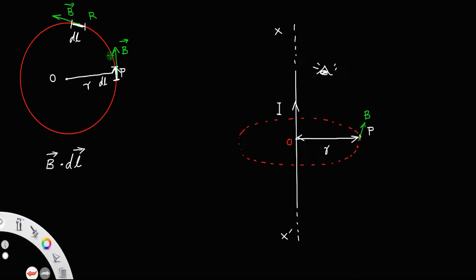So, I want to take the dot product of B dot DL along the whole circle, along this closed loop. So, I want to integrate it along this circle, integrating along a closed loop.